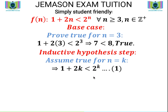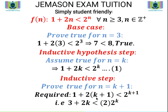We now move to the inductive hypothesis step, where we assume the statement is true for n = k. We have that 1 + 2k < 2^k, and we call that relationship (1) because we are going to be making reference to it later.